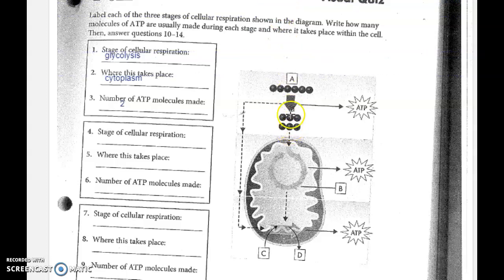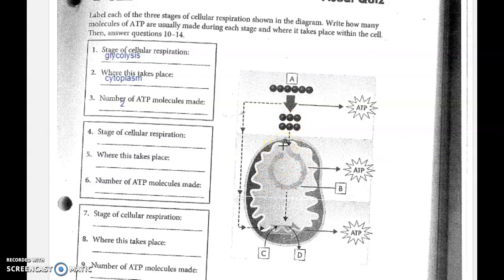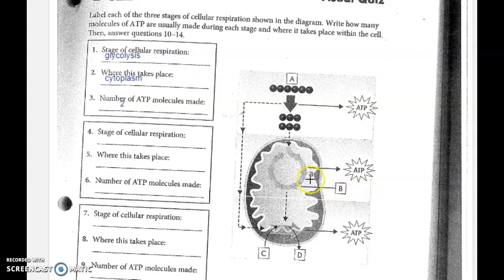As those pyruvic acids move into the mitochondria, they go into what's known as the Krebs cycle. It's going to turn through two times because there are two molecules of pyruvic acid coming in. It's going to create citric acid — sometimes it's called the citric acid cycle because citric acid is produced. It is also going to produce the byproduct or waste product, carbon dioxide, as carbons are being broken off those pyruvic acids. So carbon dioxide will go out as a waste product. This is the Krebs cycle, or citric acid cycle.